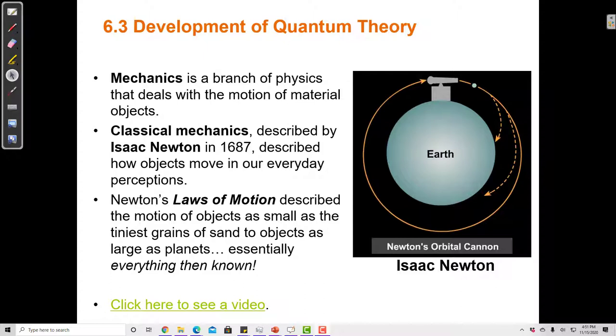Classical mechanics, as described by Isaac Newton, described how objects move in our everyday perceptions. Newton's laws of motion described the motion of objects as small as the tiniest grains of sand to objects as large as planets, which at that point was essentially everything that was known.